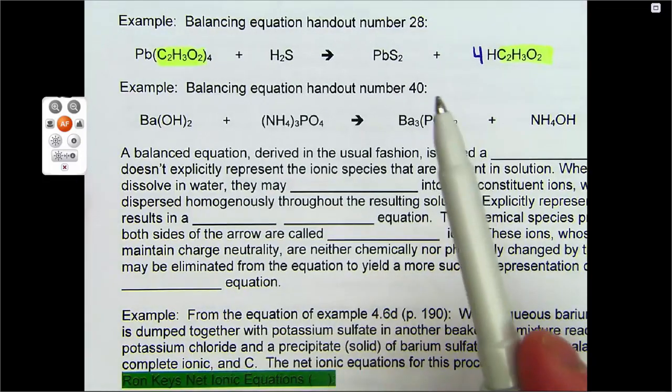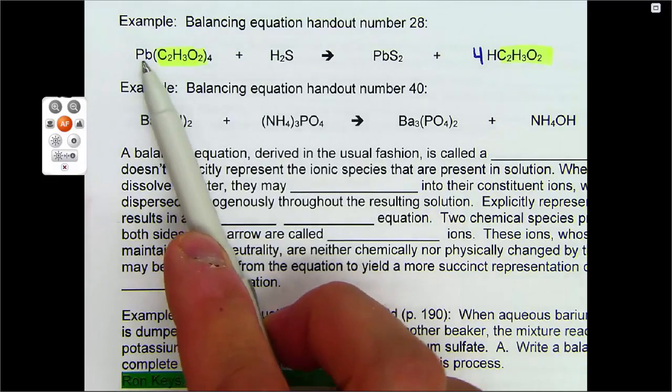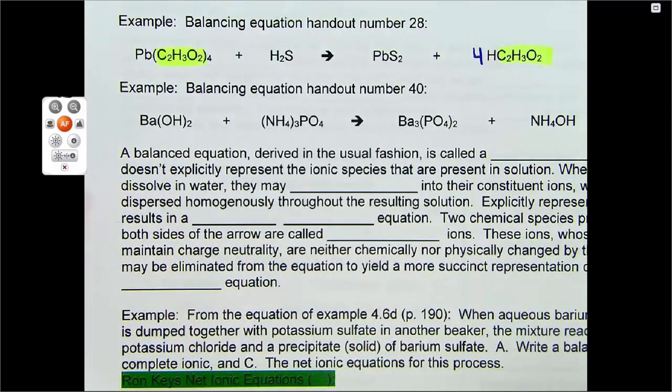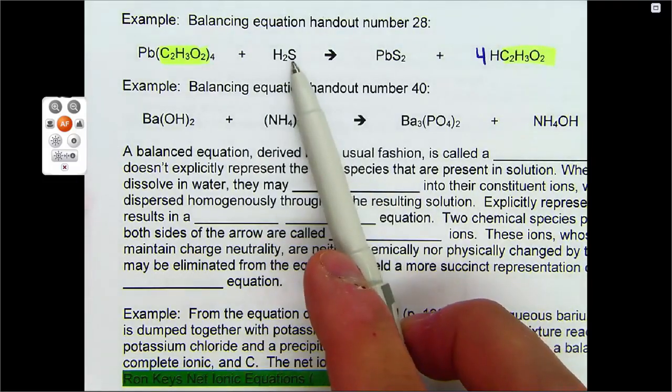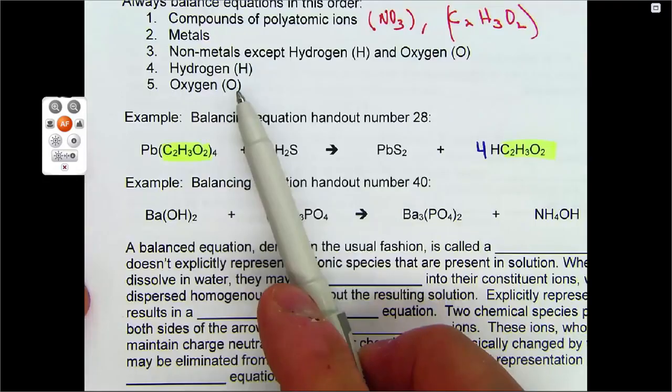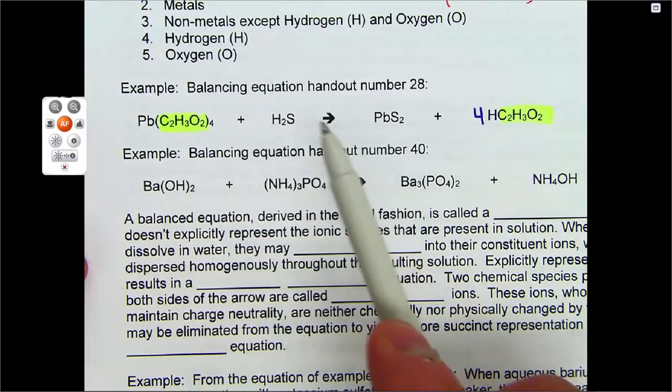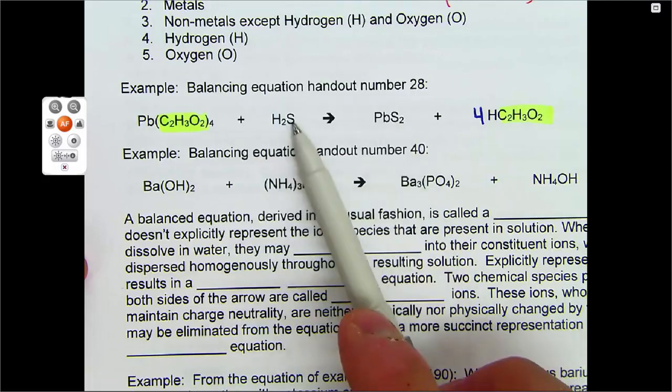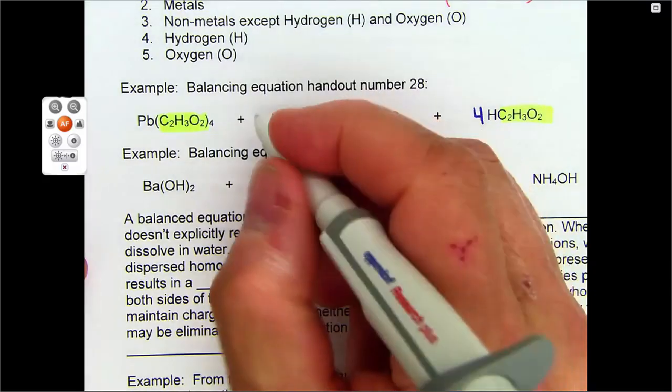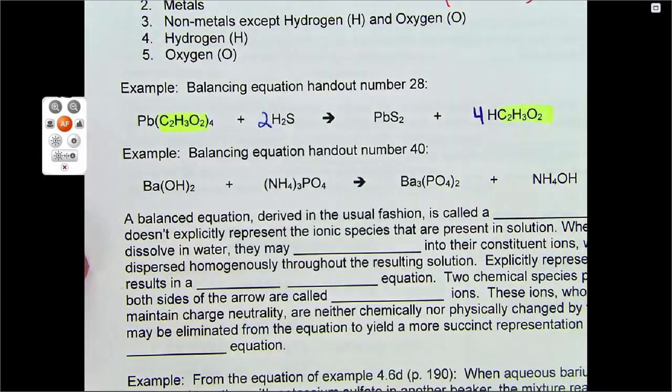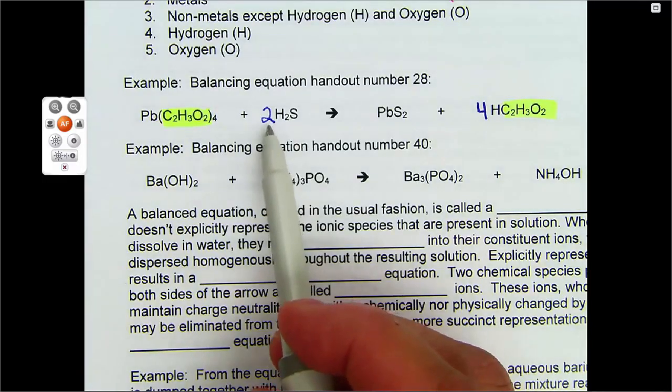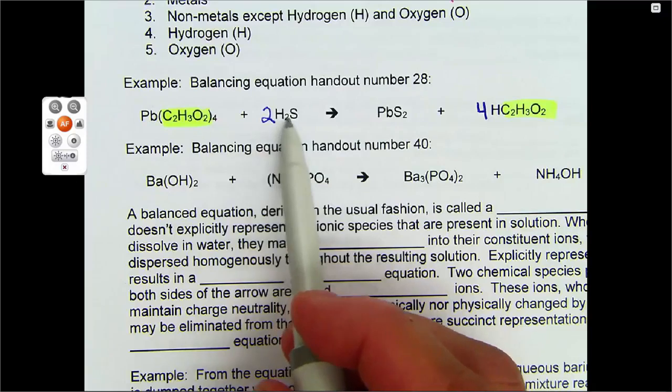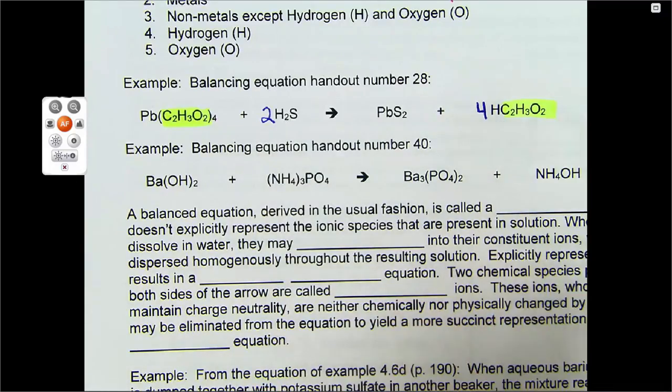Okay. So that takes care of the polyatomic ions. I want to do metals next. And lead is a metal. There's one lead and one lead. And now I want to go to non-metals. And that would be sulfur. So I want to do hydrogen and oxygen last. So I've got two sulfurs here and only one sulfur here. So I need to put a two. And I think that is going to do it. Because look at what I have here. I have two times two. I have four hydrogens. And four times one is four hydrogens.